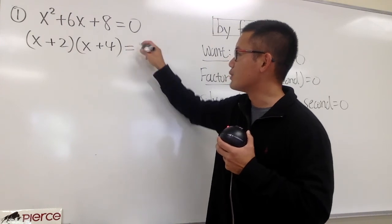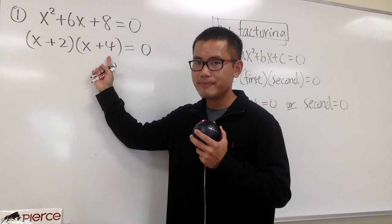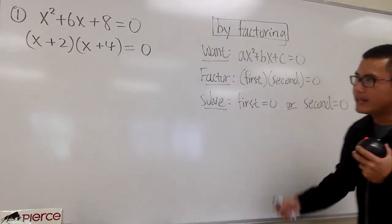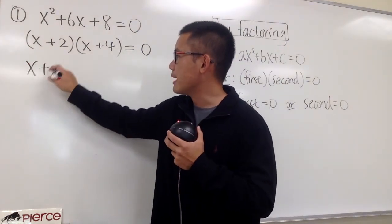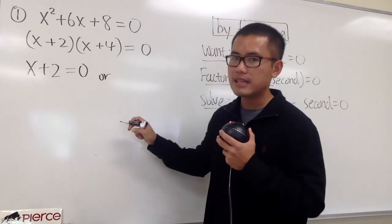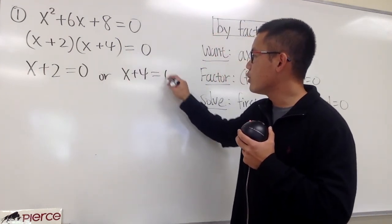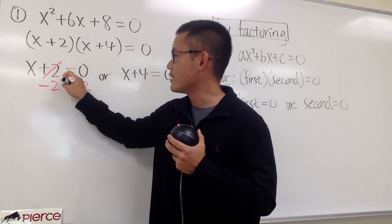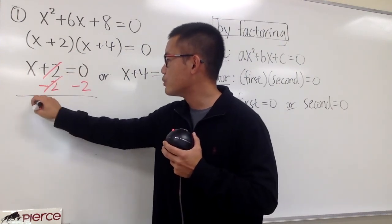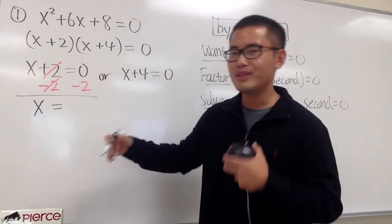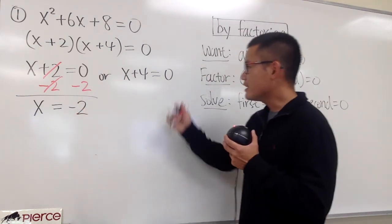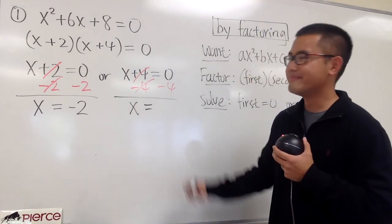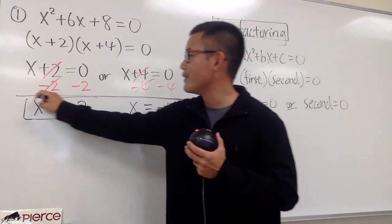So we have (x plus 2)(x plus 4) equals zero. The order doesn't matter — plus 4 first or plus 2 first is totally fine. Now we set each factor equal to zero: x plus 2 equals 0, or x plus 4 equals 0. For the first, subtract 2 from both sides to get x equals negative 2. For the second, subtract 4 from both sides to get x equals negative 4. Those are the two solutions for this equation.